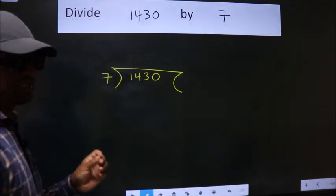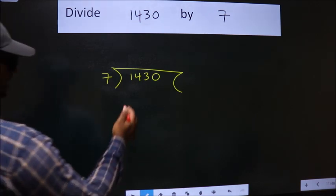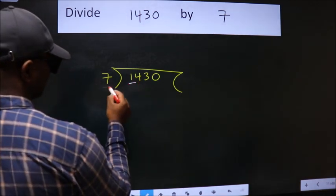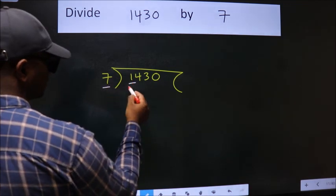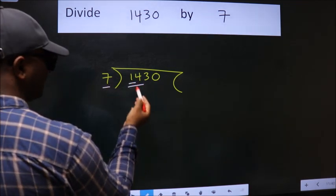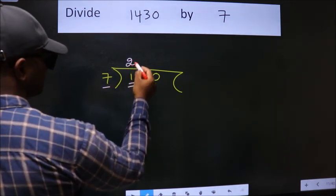This is your step 1. Next, here we have 1, here 7. 1 is smaller than 7, so we should take two numbers: 14. When do we get 14 in the 7 table? 7 twos, 14.